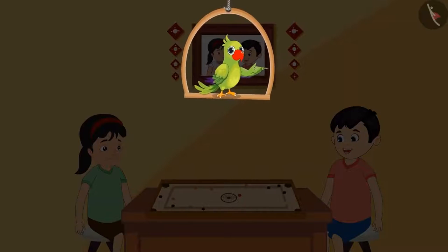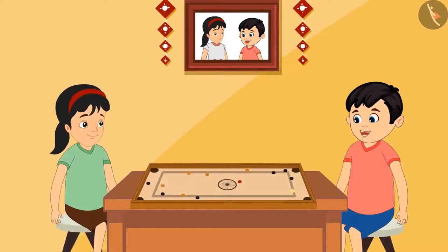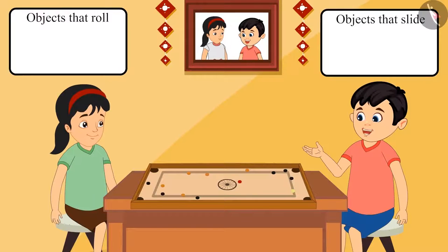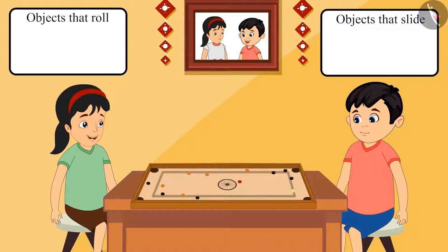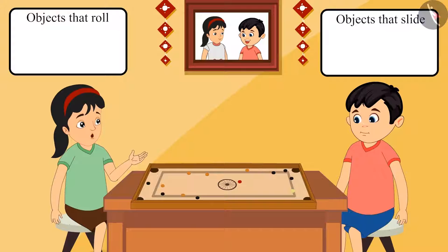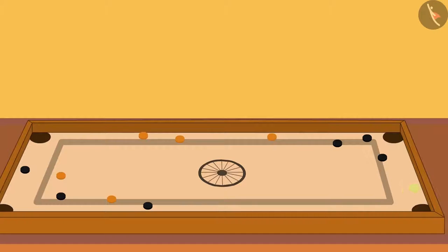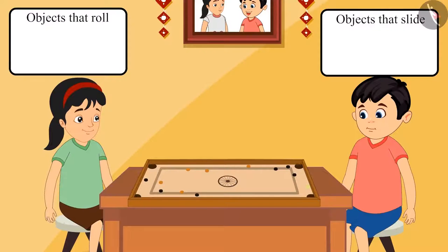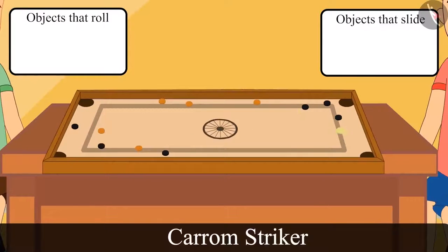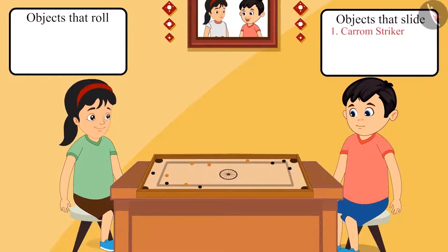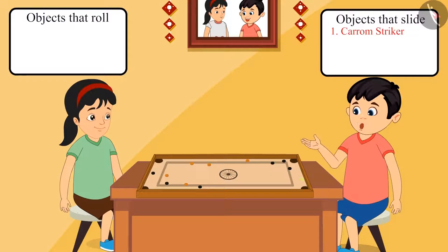Chotu and Pinky have come home from school and are playing Carom. Pinky asks if Chotu remembers that they were asked in school to make a list of items that roll and slide. Chotu says yes, let's make the list after playing. While tossing the queen into the pit, they notice the pieces are sliding — one example found! They decide to push more objects to observe.